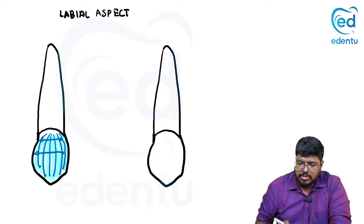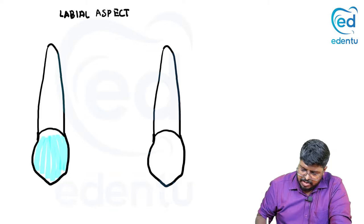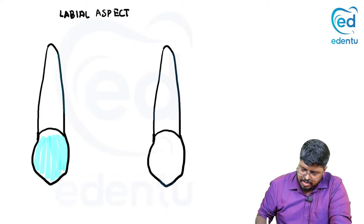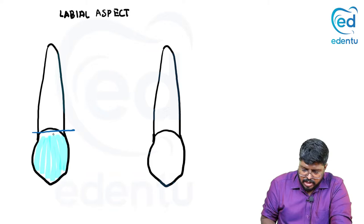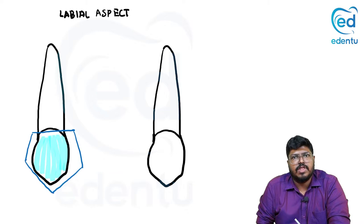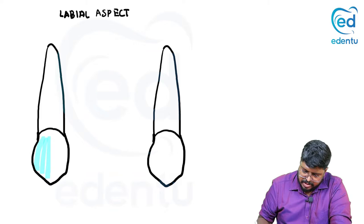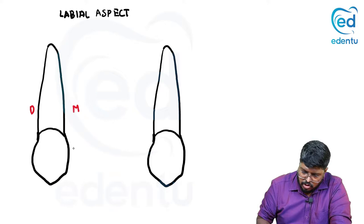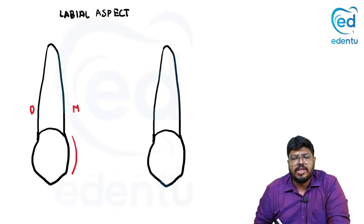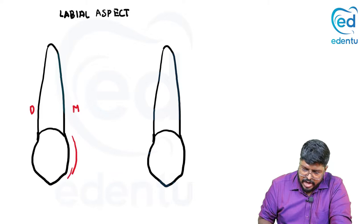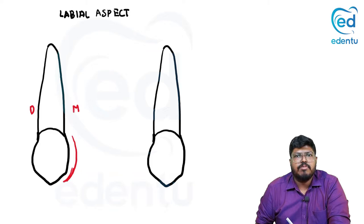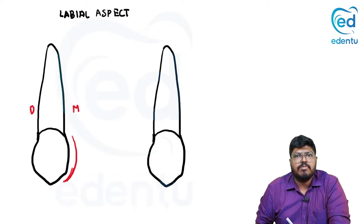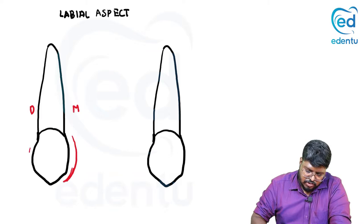The general outline of the tooth is pentagonal with five sides. The mesial outline is much more convex, and you will see a rounded mesio-incisal angle. The distal margin is also slightly convex, but at the region of the cervix there is a slight concavity, and you will also see a much more rounded distal incisal angle.